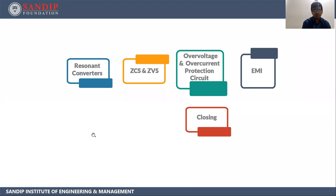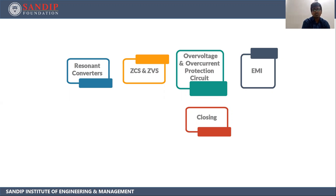In this unit we are going to see the following topics: resonant converters, ZCS and ZVS — that is zero current switching and zero voltage switching — over voltage and over current protection circuits, and EMI, electromagnetic interference.